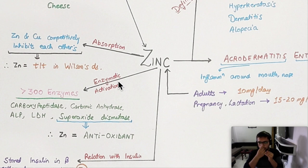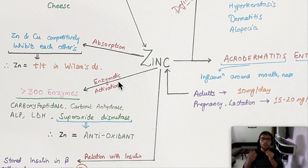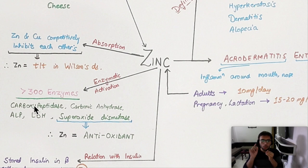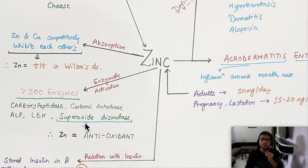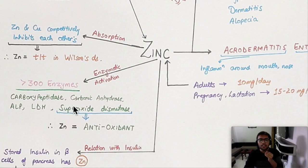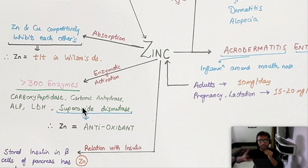For enzymatic activation, zinc activates more than 300 enzymes. What you need to remember are carboxypeptidase and carbonic anhydrase — I hope you remember carboxypeptidase from your NEET days. Apart from those, ALP and LDH are also good to remember, but never forget superoxide dismutase.